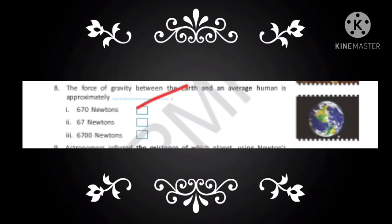The force of gravity between the Earth and an average human is approximately 670 newtons. So, that much force is exerted by the Earth on human body and it was found by Newton. That's why its unit is Newton and it measures 670 newtons.